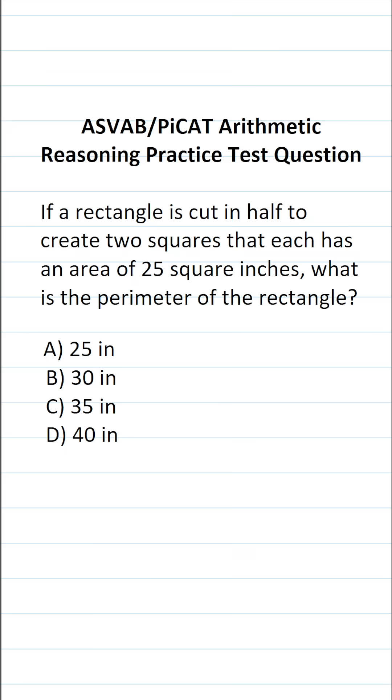So again, on the actual ASVAB and PICAT, you're not given a reference sheet or a calculator. For that reason, you have to commit some basic formulas to memory, including how to calculate the perimeter and area of squares and rectangles.